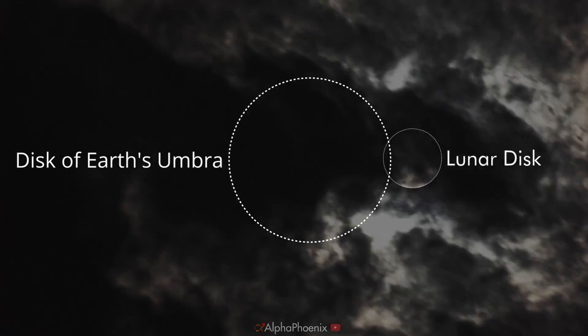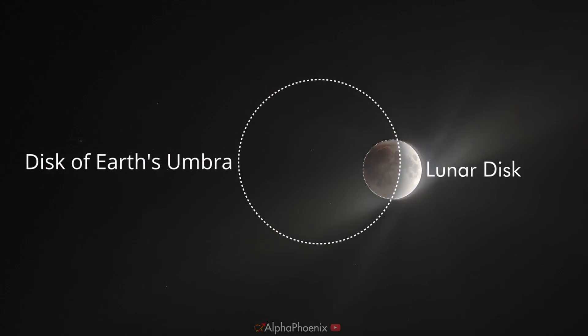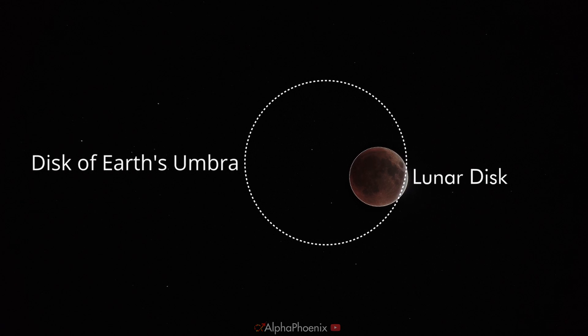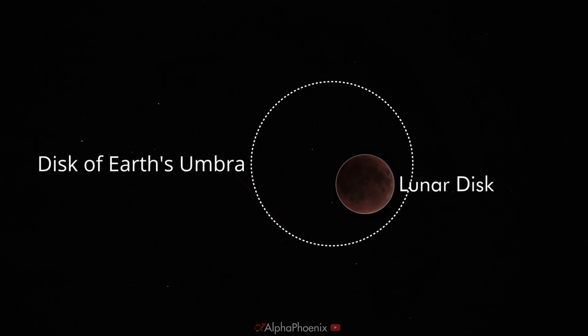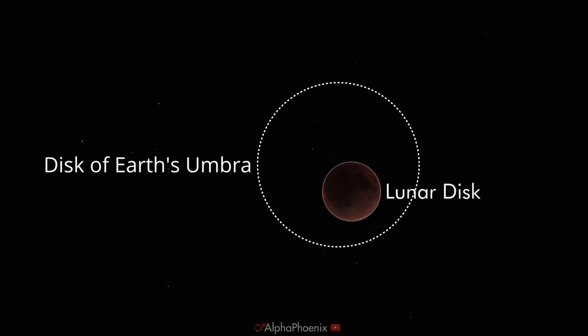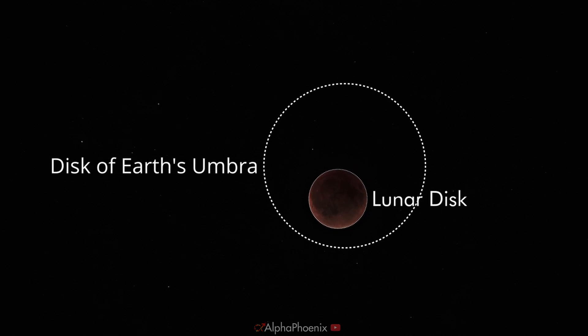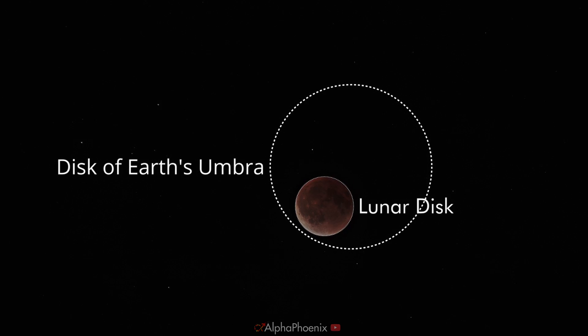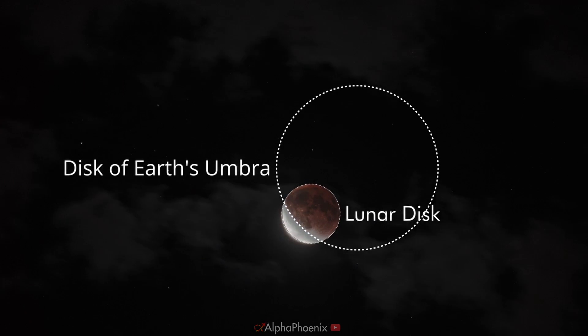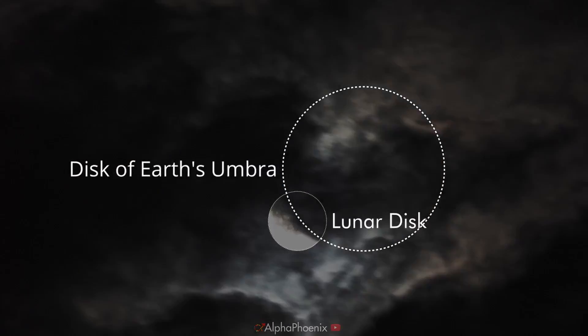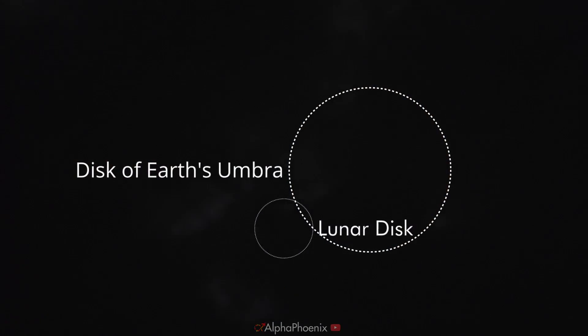This is a time-lapse of the spring 2022 lunar eclipse. Although it has a few problems — notably some sketchy stabilization and an abundance of clouds — it's a lot better than my previous attempt. Let me explain the motion of the moon, the earth's shadow, and the background field of stars, because it's more counterintuitive than you might expect, and I want to talk about what makes this two-camera HDR process different from the vast majority of eclipse time-lapses you'll probably see.